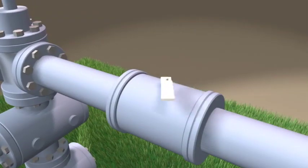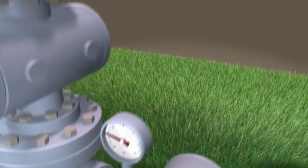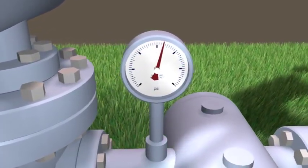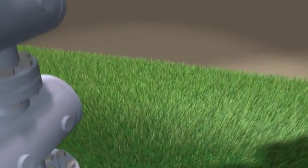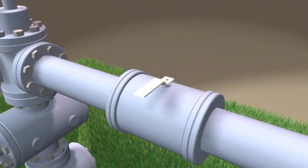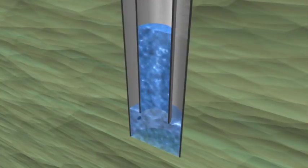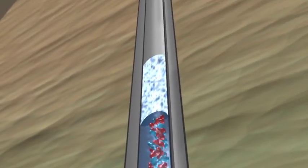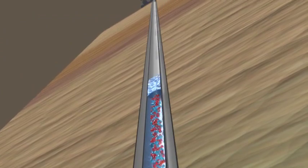Prior to plunger lift technology, the technique known as intermitting was a common approach. This involved shutting the well in for a period of time, so that pressure could build to a sufficient level to push collected slug to the surface. But this was just working on borrowed time, since the slugs and the problem always return.